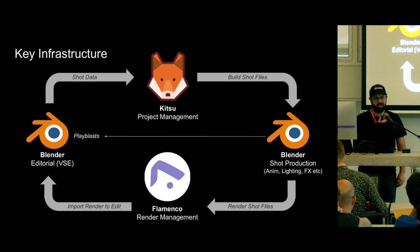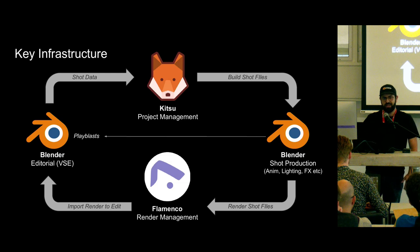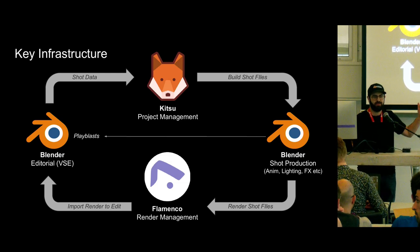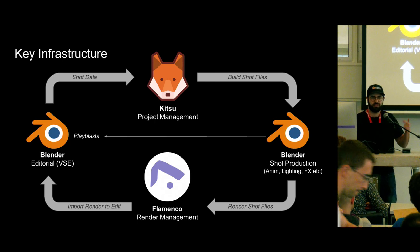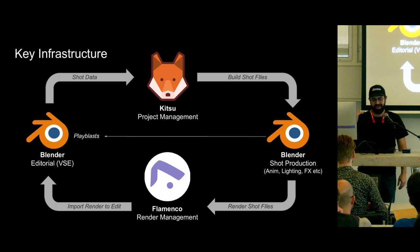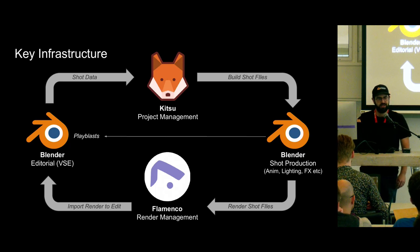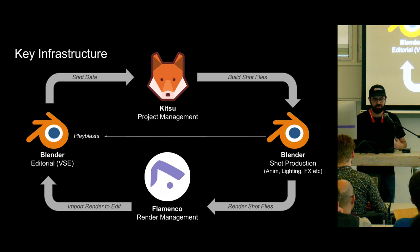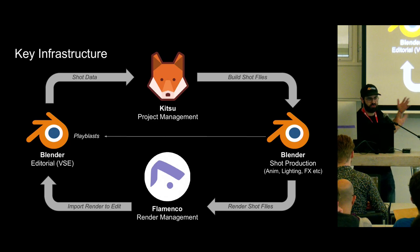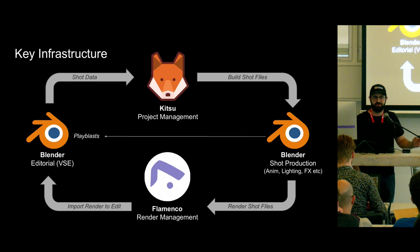When I say shot data, I mean the name of the shot, when it happens in the film, and for how long that shot happens. Once we have all that data stored in our Kitsu server, we can use it to actually build the production files you'll use in your pipeline — that'll include your animation, lighting, compositing, all those files. We have an add-on that will build all those for you. Once the artistic work is completed, you send those files to a render manager. We use the render manager Flamenco. Once renders are completed, you can review them and re-import them back into your editorial file — going from a storyboard all the way to animation, play blasts, and finally a completed movie.